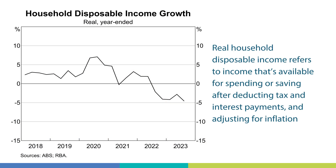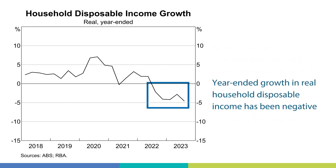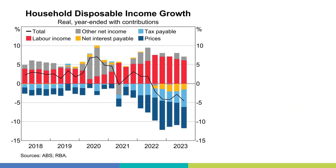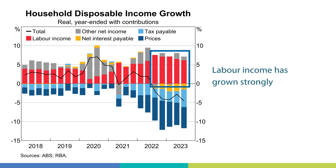Real household disposable income is a measure of people's income that is available for them to spend or save after deducting tax and interest payments and adjusting for inflation. Year-ended growth in real household disposable income, the black line, has been negative for more than a year, meaning that real household disposable incomes have been declining over this period. The coloured bars show the contribution of different factors to household income growth. The red bar shows labour income — people's wages and salaries — and it has grown strongly, boosting people's disposable incomes.